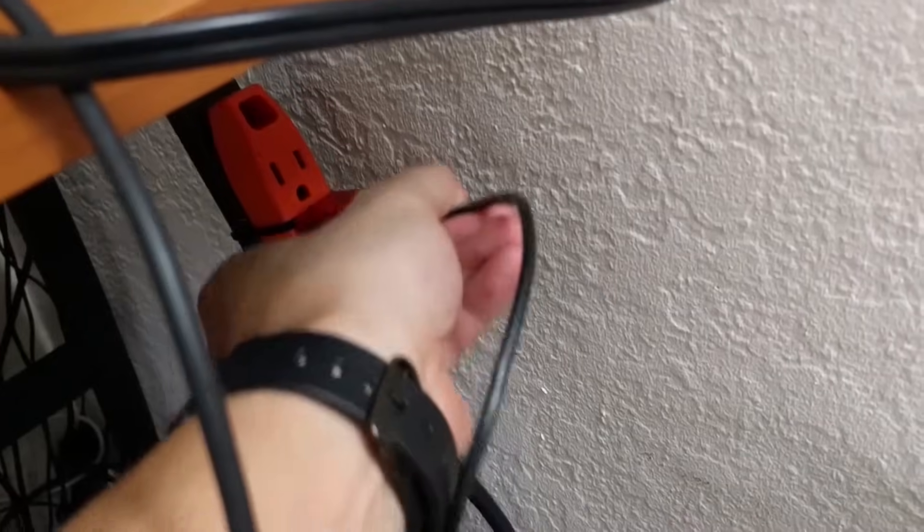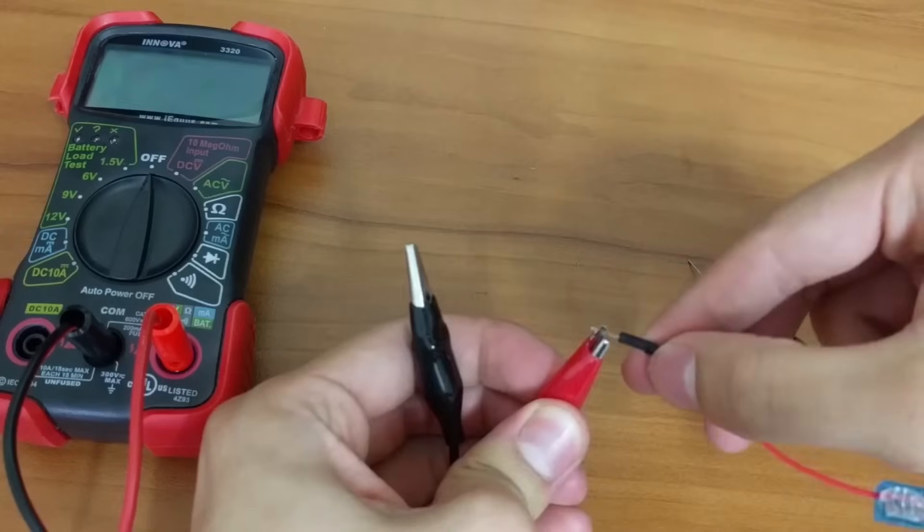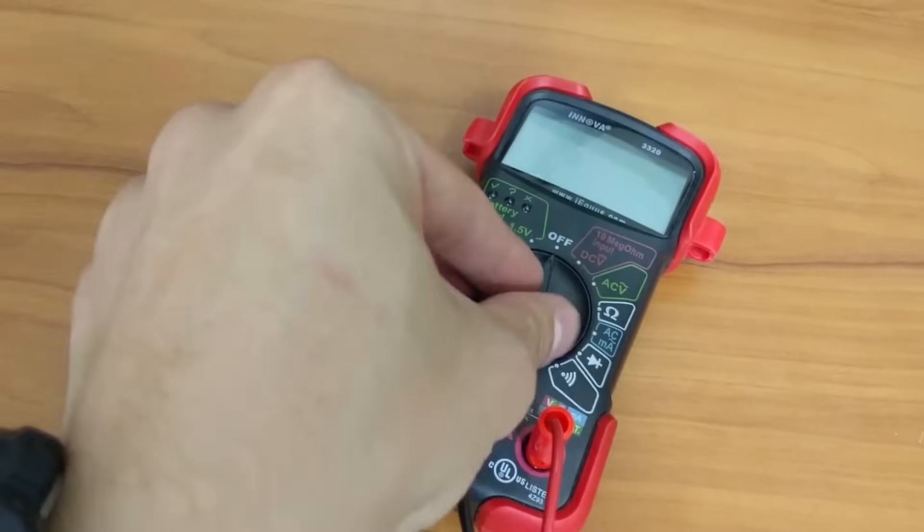To test your wire, plug it into the wall charger. Then use the multimeter to see if you are getting 5 volts.